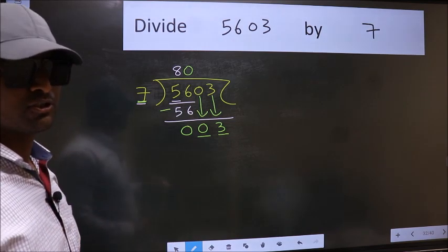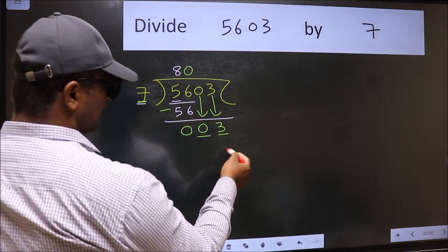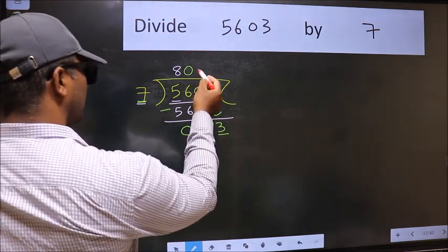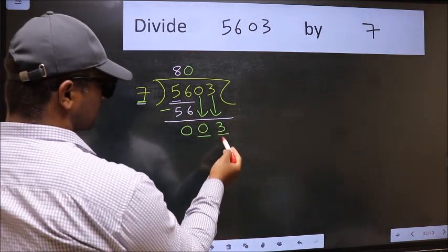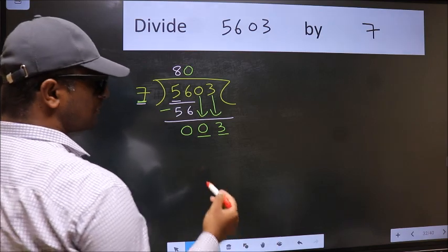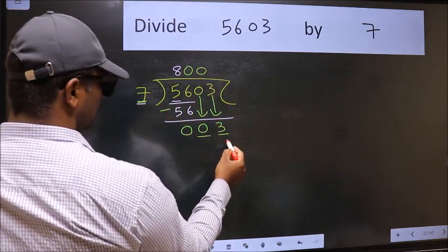Instead, what you should be thinking is, which number should be right here? If I take 1, we will get 7. But 7 is larger than 3. So what we should do is, we should take 0. So 7 into 0, 0.